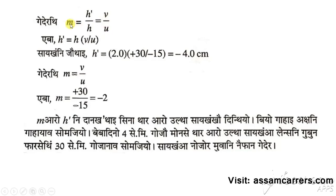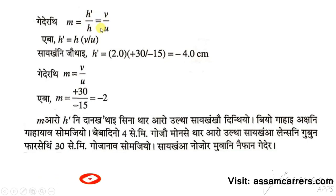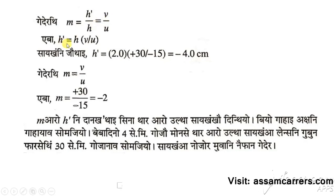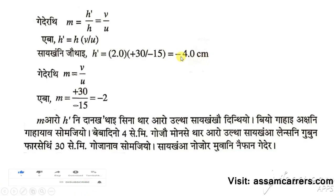It is 30 cm. h by h equal to v by u. If we have this problem, we can see h by h equals v by u. h equal to h equal to minus 4.0 cm. If we have minus 4.0 cm, we can see h by h.